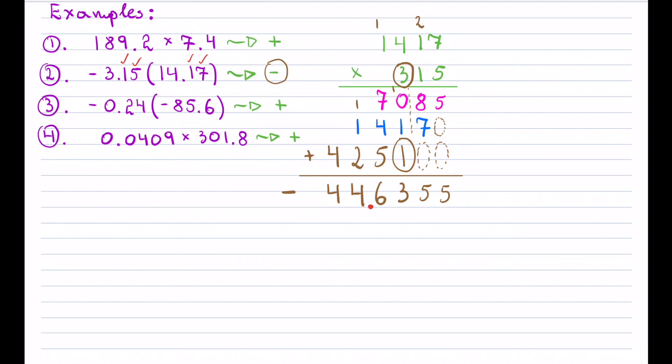Counting the decimal places: we have 2 in the first number and 2 in the second, so in total we have 4 decimal places. You always start from the back and count — that's example number two.